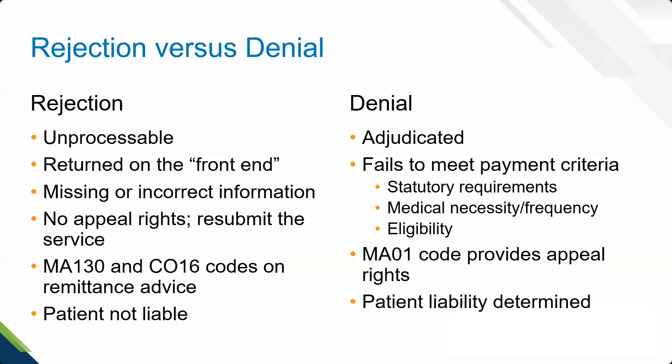A denial, on the other hand, is a claim that has been adjudicated. The reason for the denial could be one of many: it could be due to not meeting payment criteria based on the law — statutory requirements — or the information on the claim doesn't meet Medicare's medical necessity guidelines, including frequency or utilization parameters. Another reason could be eligibility. When a claim denies, there will be an MA-01 code on the remittance advice notifying the provider of appeal rights. With very few exceptions, there are appeal rights when a service is denied, and patient liability is determined.